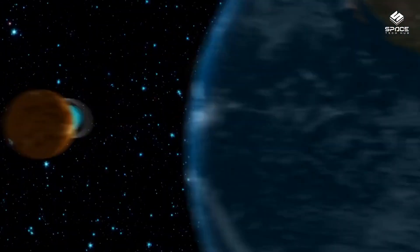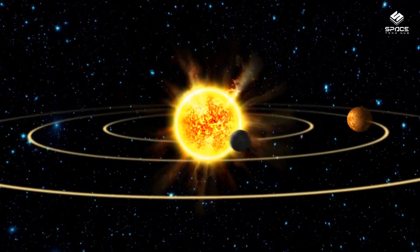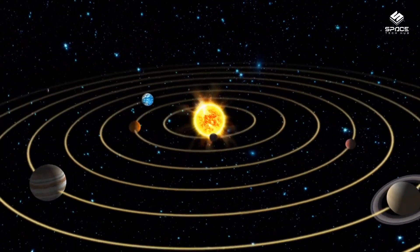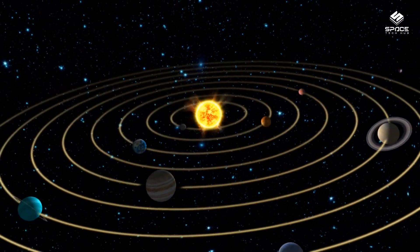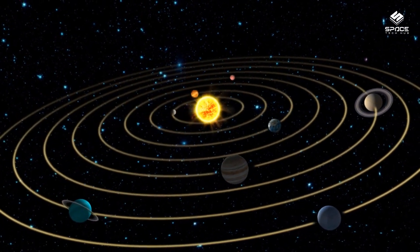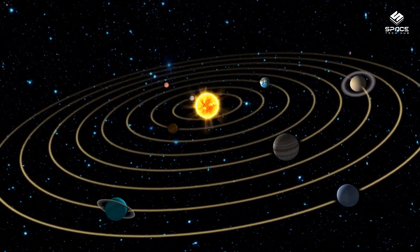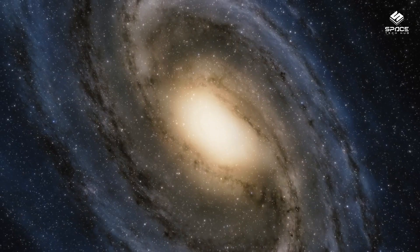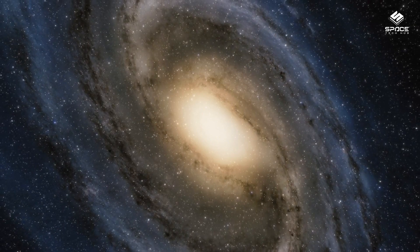You may have heard the phrase 'the planets are aligned' before, but what does it really mean? Well, it means that from our perspective on Earth, all of the planets in the solar system appear to line up in a straight line. This is also called a planetary conjunction or a syzygy.